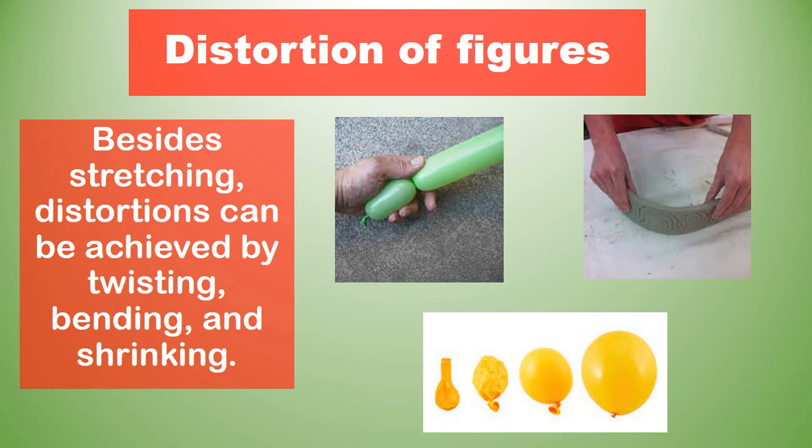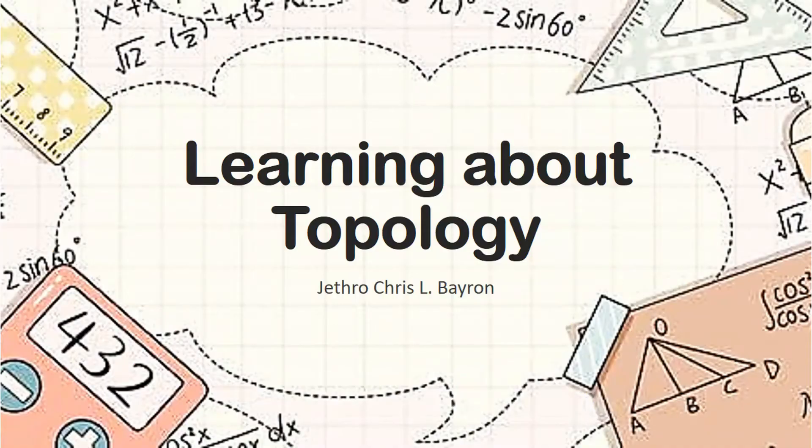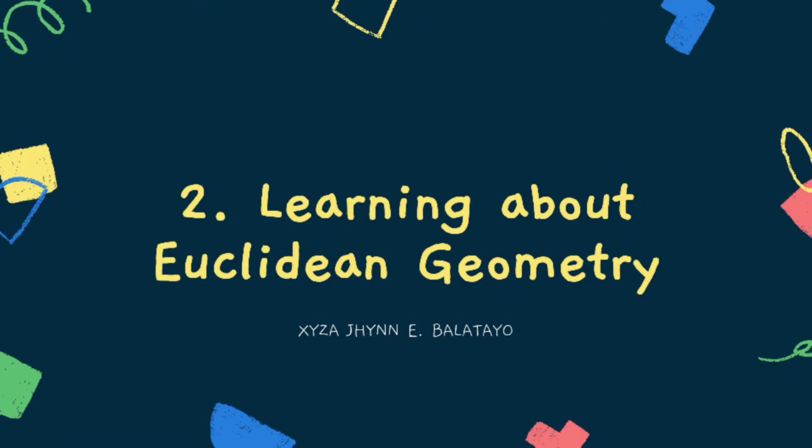Next is distortion of figures. Besides stretching, distortions can be achieved by twisting, bending and shrinking. Experimenting with Möbius strips is one type of activity that involves figure distortion by twisting. That's it for my topic about learning topology. Now let us proceed to the next reporter about learning Euclidean geometry.